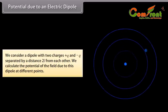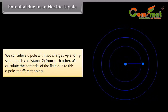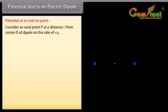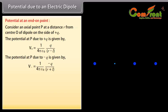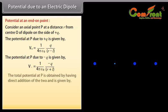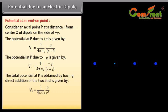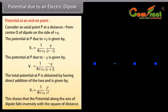Potential due to an electric dipole. We consider a dipole with two charges plus Q and minus Q separated by a distance 2L from each other. For the end-on point, consider an axial point P at a distance R from center O of dipole on the side of plus Q. The potential at P due to plus Q is V positive equals 1 upon 4π ε₀ multiplied by Q upon (R minus L). The potential at P due to minus Q is V negative equals 1 upon 4π ε₀ multiplied by minus Q upon (R plus L). The total potential at P is VE equals 1 upon 4π ε₀ multiplied by P upon R squared. This shows that the potential along the axis of the dipole falls inversely with the square of distance.